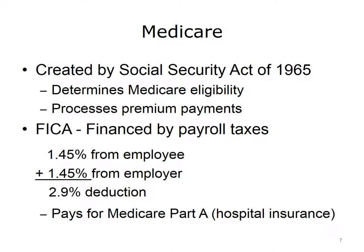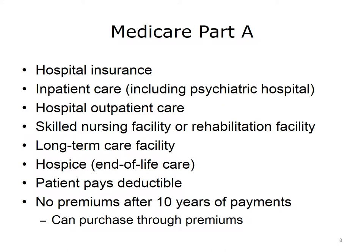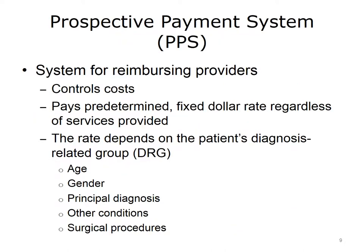Medicare Part A is hospital insurance, but is not limited to just hospital care. Part A also covers skilled nursing facilities, rehabilitation centers, long-term care facilities, home health care, hospice programs, and certain outpatient care. Like most insurance, there is a deductible for this coverage. Americans who have paid FICA for at least 10 years pay no premium for Part A coverage; those who have not can purchase Part A through premiums. Medicare uses a prospective payment system to reimburse Part A providers, paying a predetermined fixed rate per patient regardless of services actually performed. The rate is determined by the patient's diagnosis-related group, or DRG, assigned based on factors such as patient age, gender, principal diagnosis, other conditions, and surgical procedures performed.